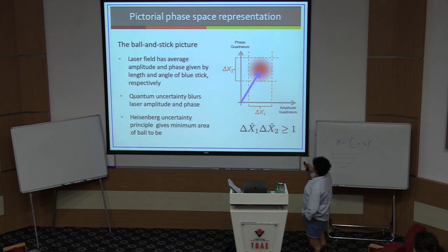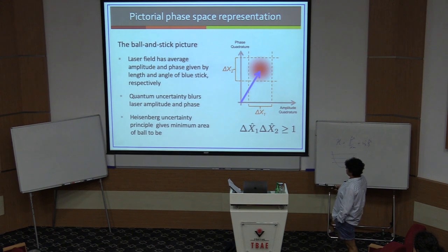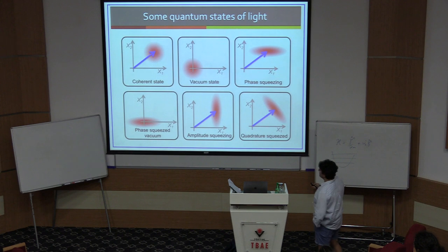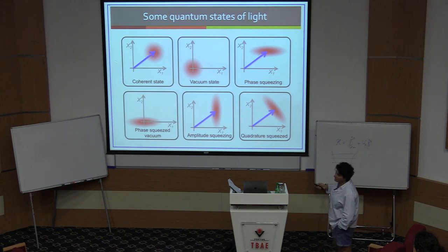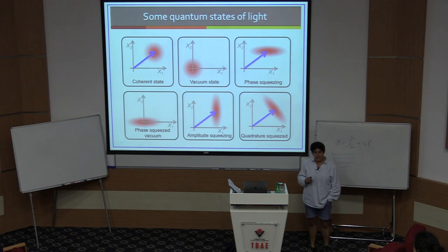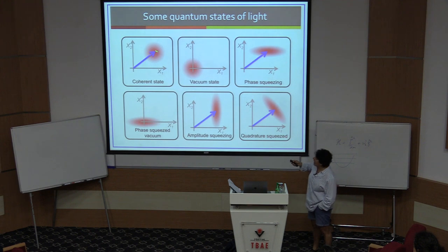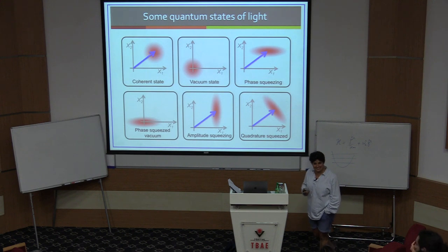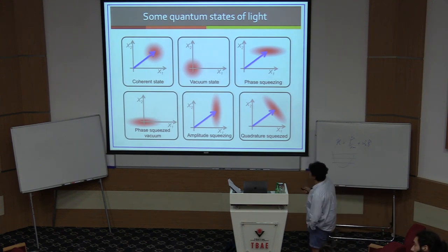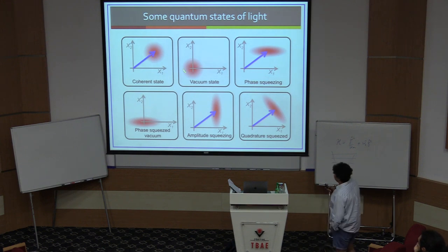Now we're going to work entirely in this phase-space representation of x1 and x2. Here are some quantum states of light. The one on the top left is a coherent state — that is a laser. A laser basically has an amplitude and a phase, and it has minimum uncertainty if it is a shot-noise or quantum-noise limited laser.